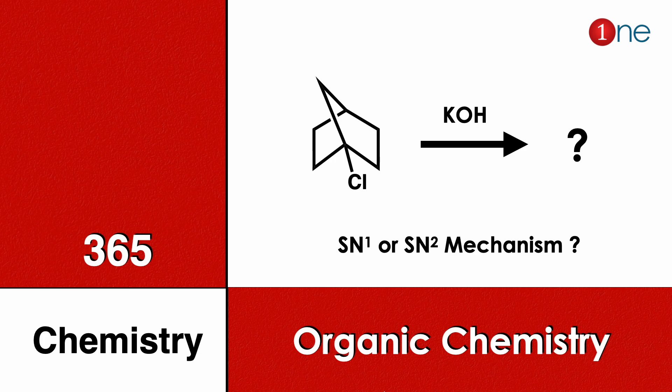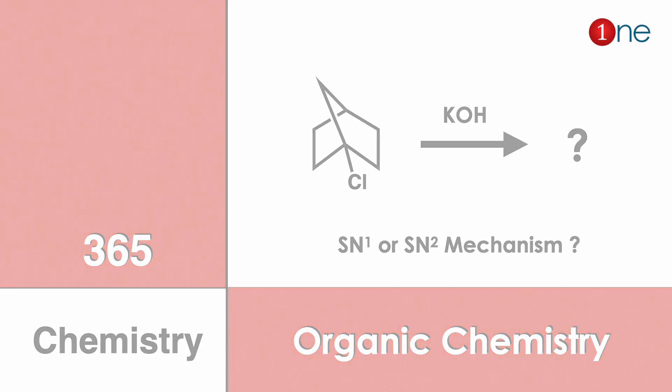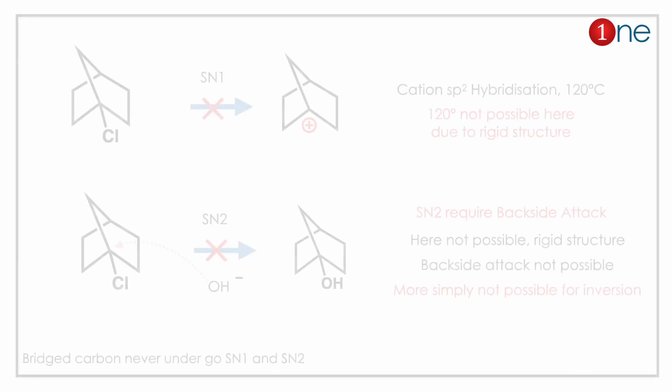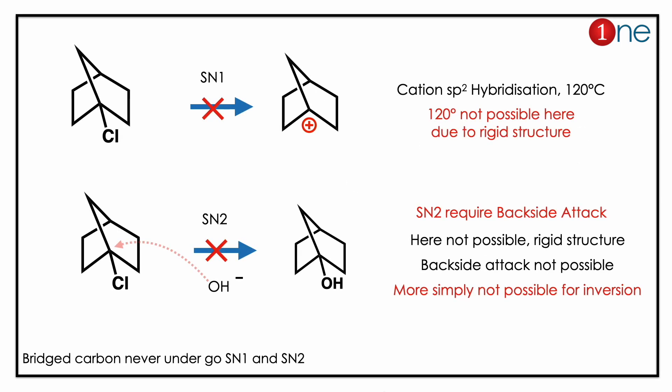Welcome to One Chemistry — this is the 365 Chemistry Series, organic chemistry questions for you. Here, norbornyl chloride is reacting with potassium hydroxide. You should find whether the reaction goes through an SN1 or SN2 mechanism. The reaction neither goes by SN1 nor SN2.